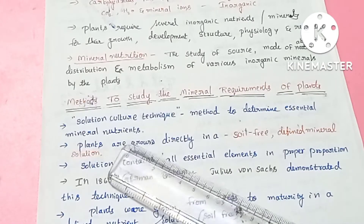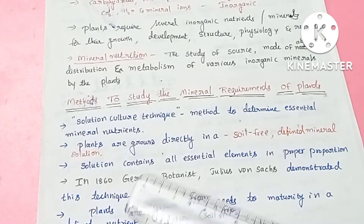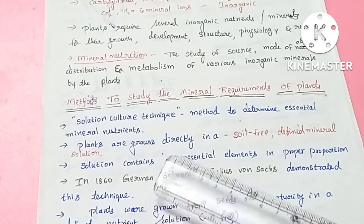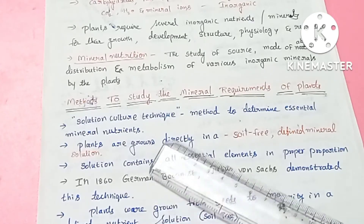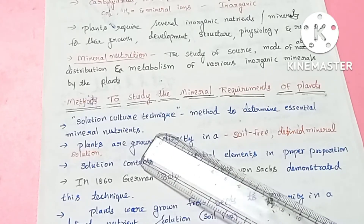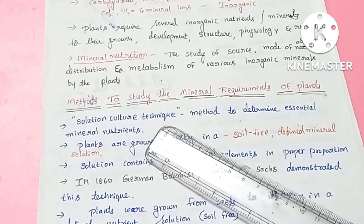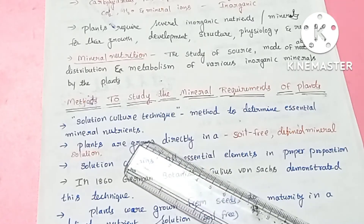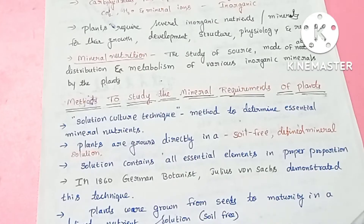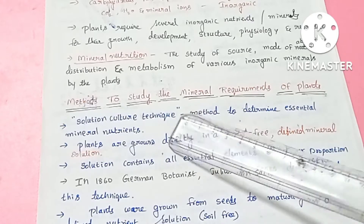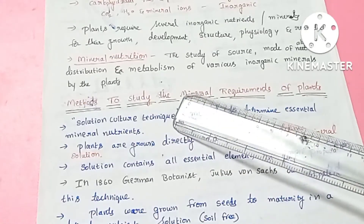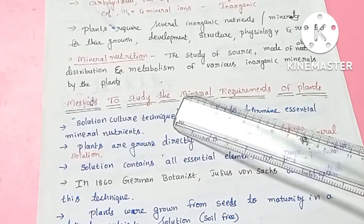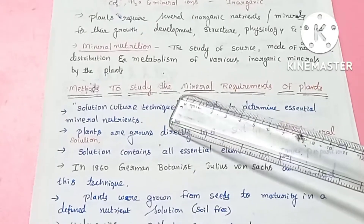There are some methods we have to study. The main method is the solution culture technique. Solution culture technique is a method to determine the essential mineral nutrients. Plants cover essential mineral nutrients through this method.